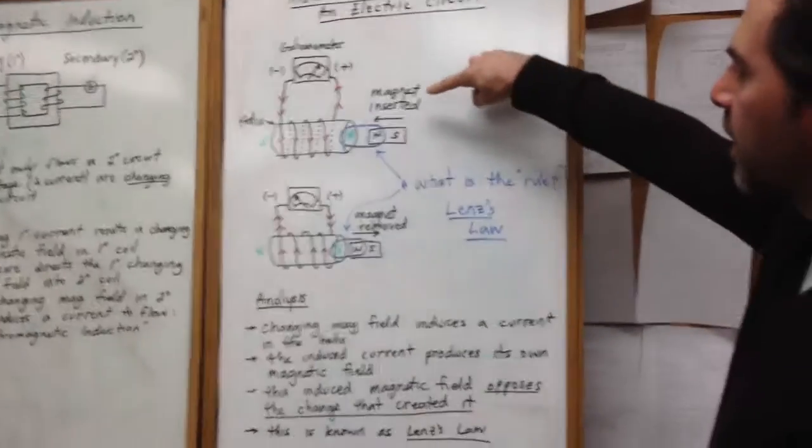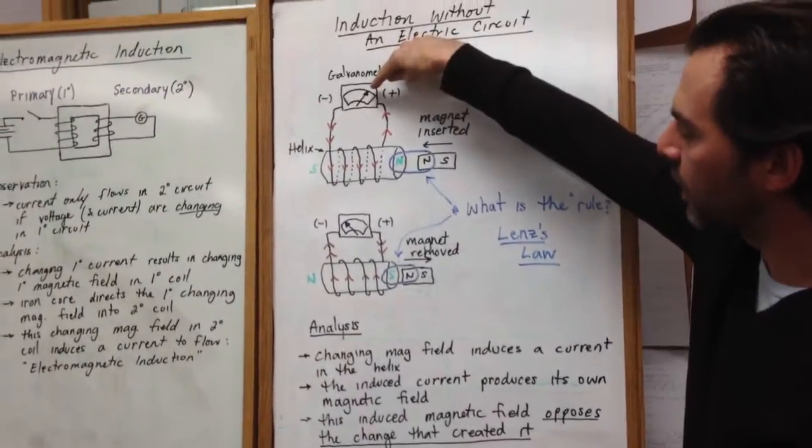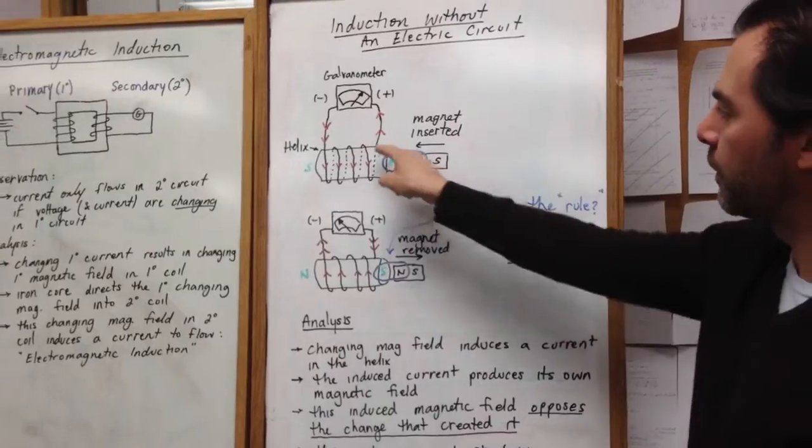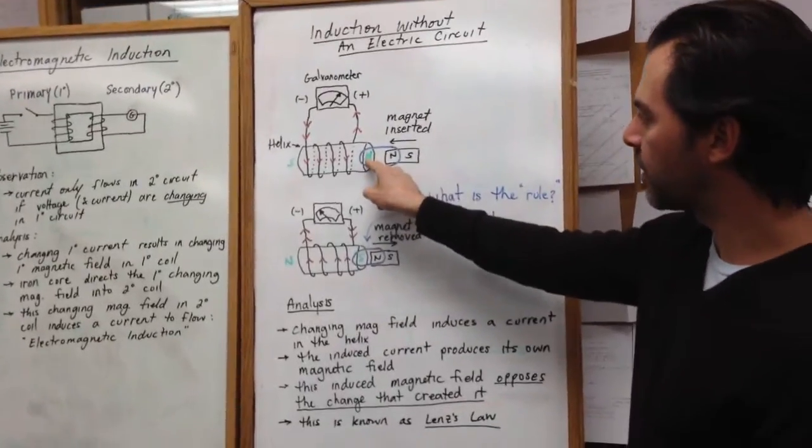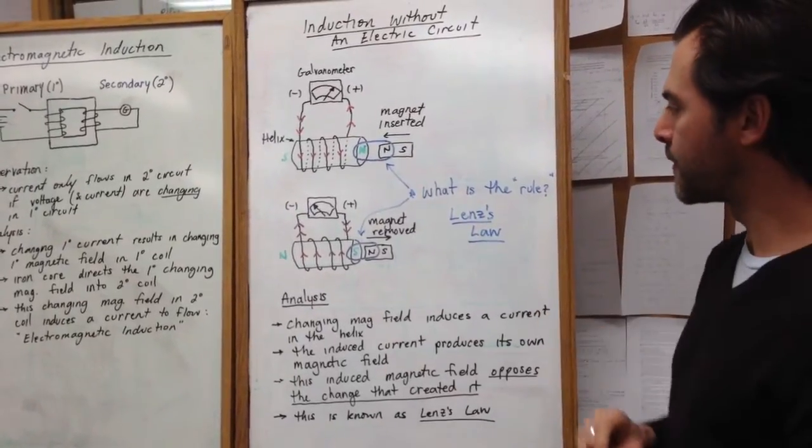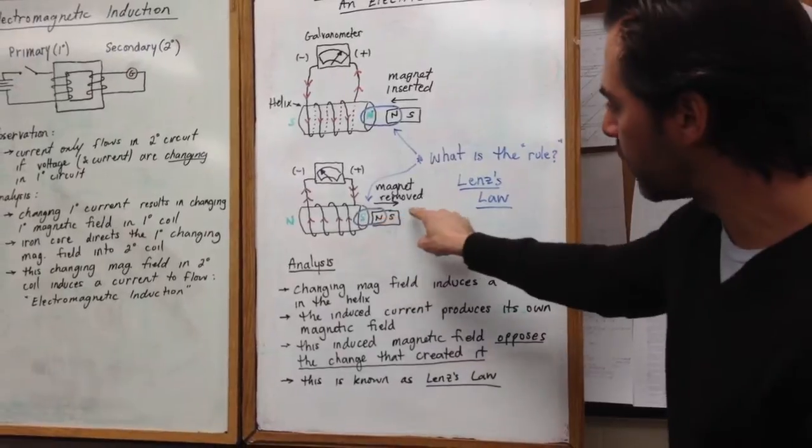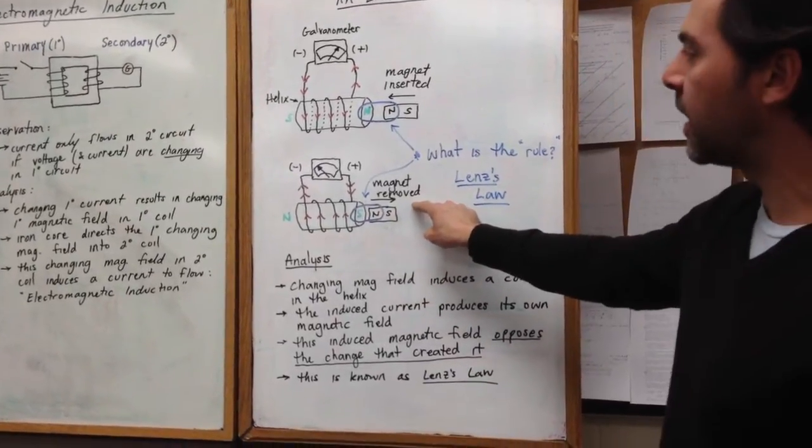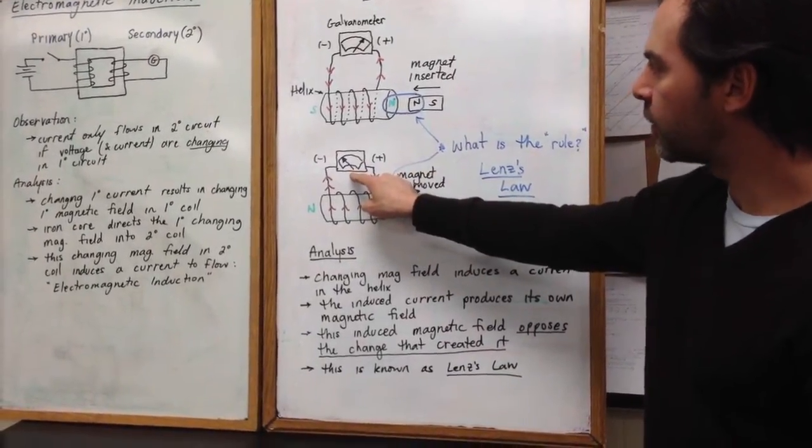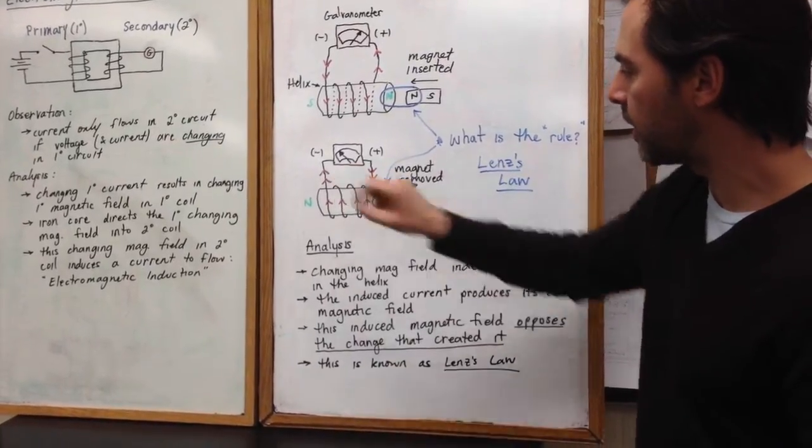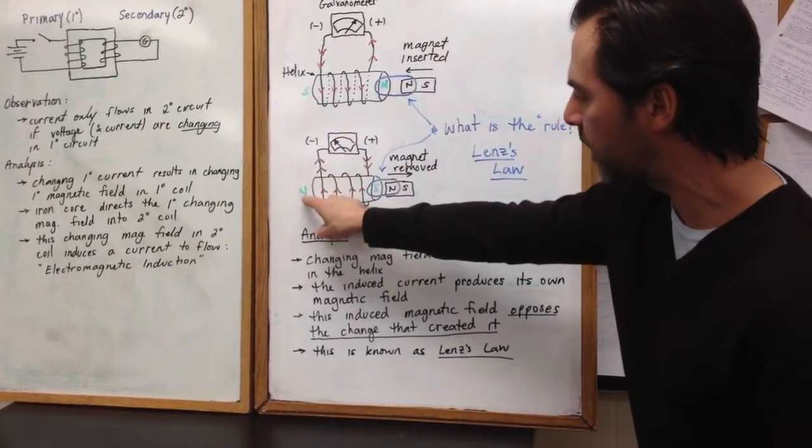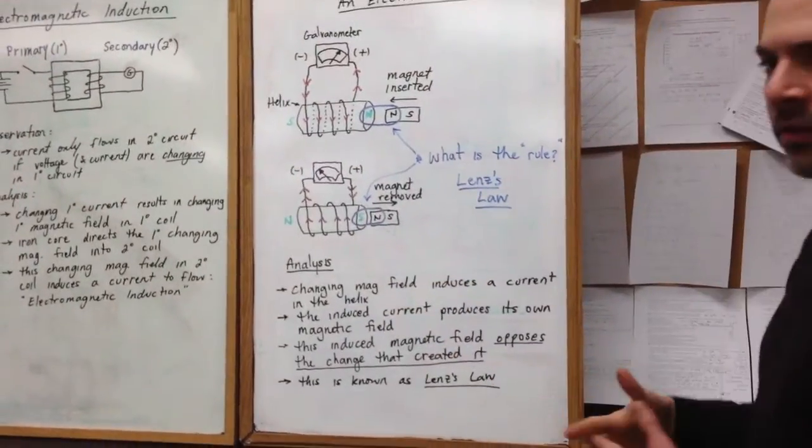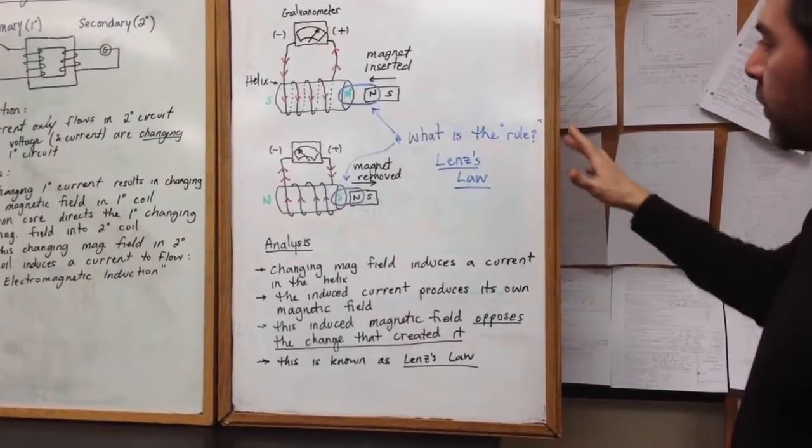So let's go to the board here and see if we can figure this out. Here's a diagram of what just happened. The galvanometer needle went to the right when the current flowed this way and when the north was inserted. We realized that a north resulted due to the induced current. What would happen if I reverse this? If I remove the north, the opposite happens. Remember how the needle went the other way, which tells me that the current flowed the other way, which if I do right hand rule number two, tells me there's a north at this end and a south at that end.